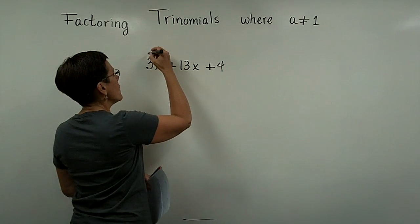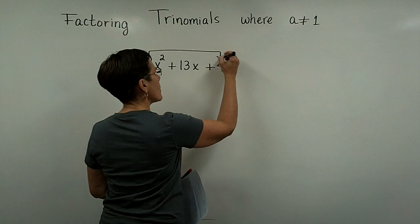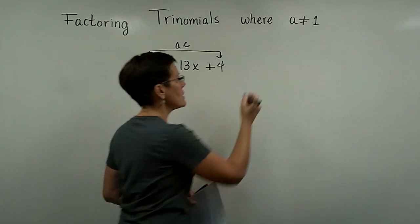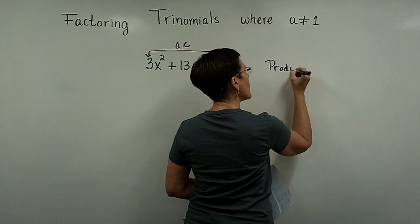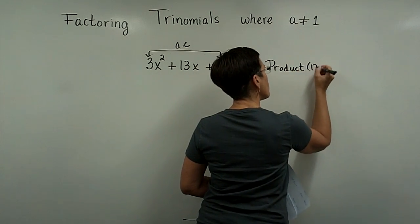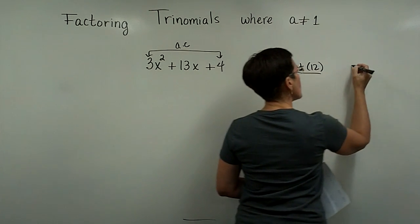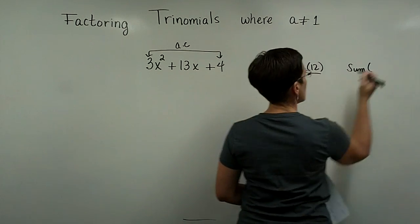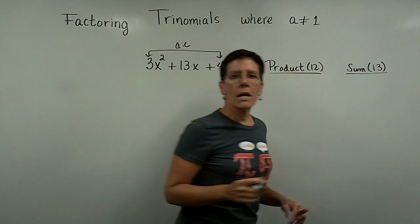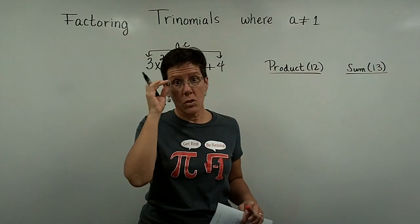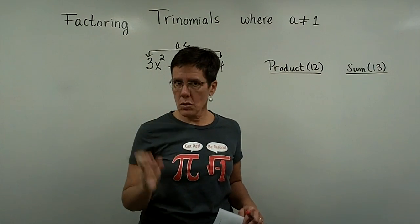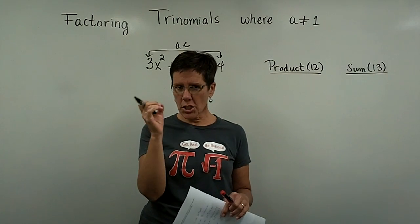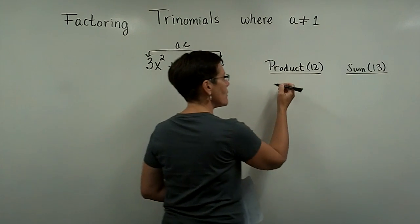Remember that we need to multiply together the a and the c values — in this case, 3 times 4. So I want two numbers whose product is 12, and then I want those two numbers to add to be the middle coefficient, in this case 13. While many of us can just see that 12 times 1 is 12 and 12 plus 1 adds to be 13, I want to share my thought process when finding these numbers.